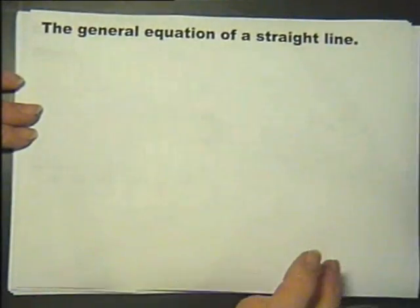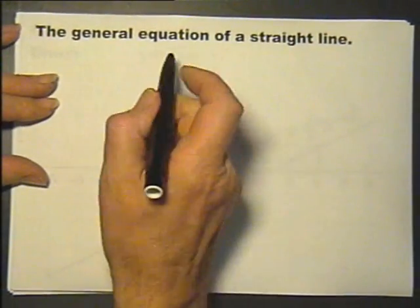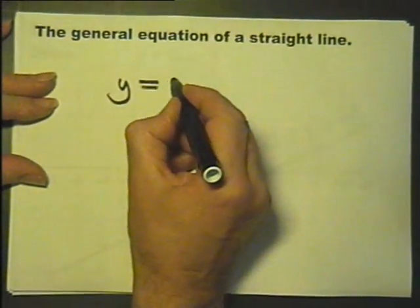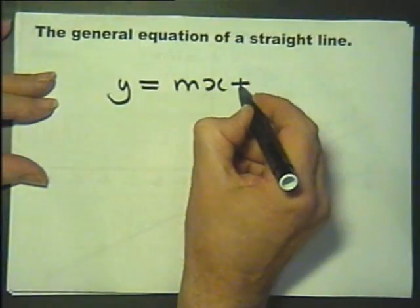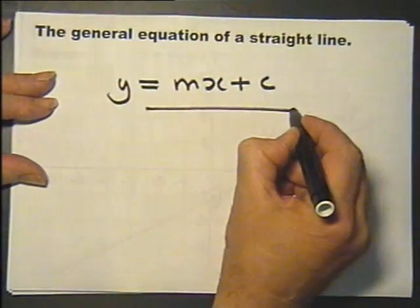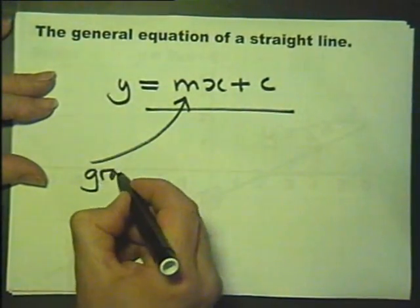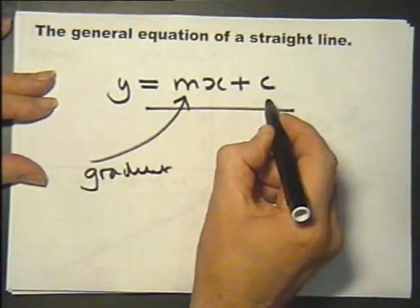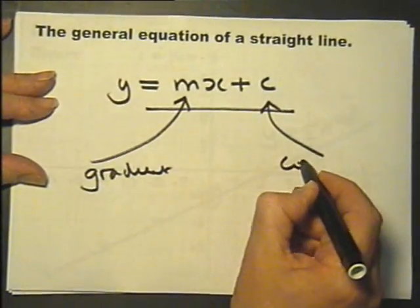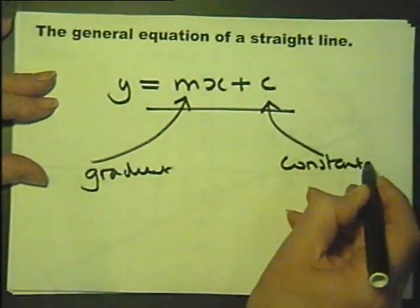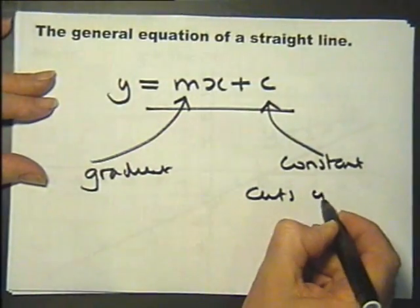And to finish with, the general equation of a straight line. And this is in fact the way it's written: y equals mx plus c. That's called the general equation of a straight line. This gives you the gradient and this is the constant, and it says where it cuts the y-axis.